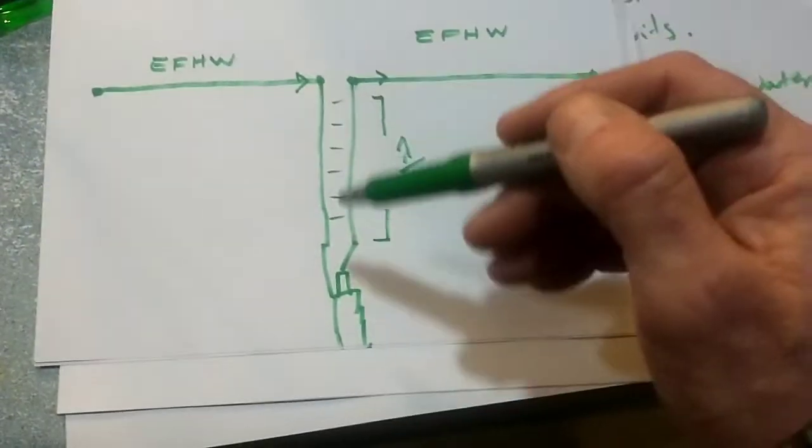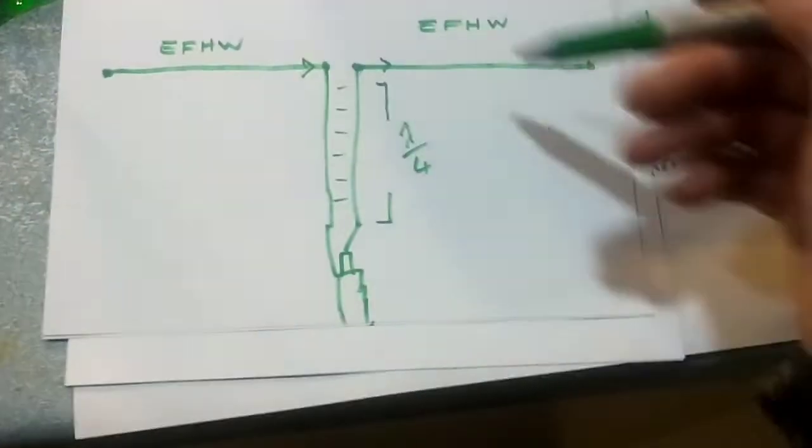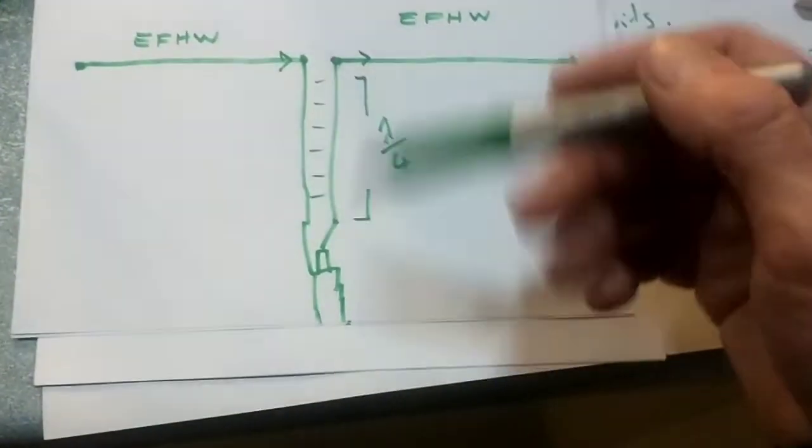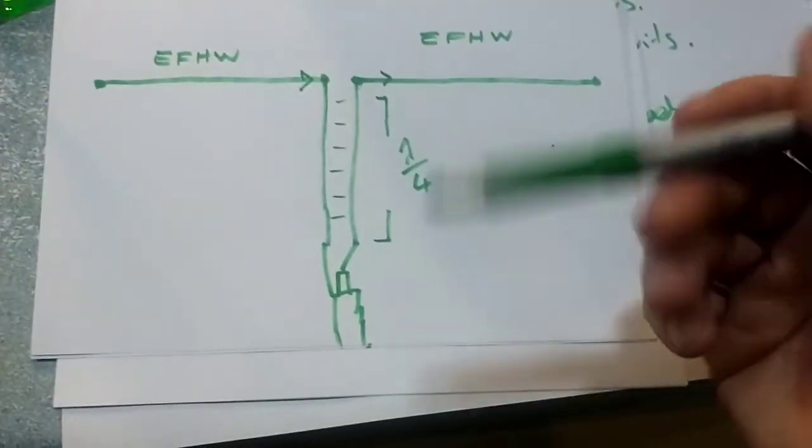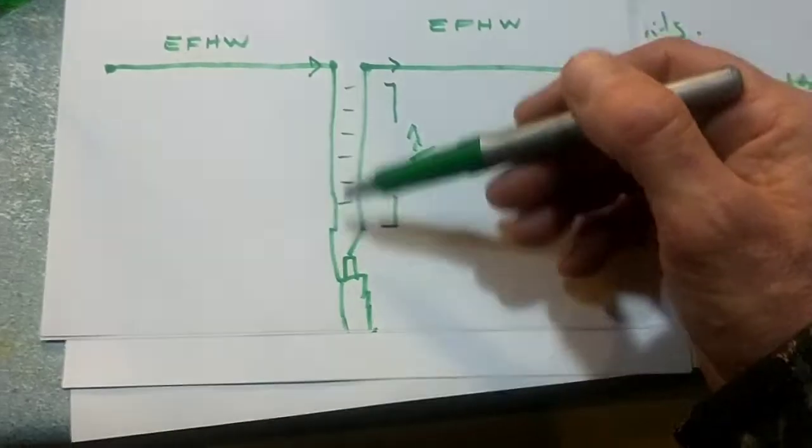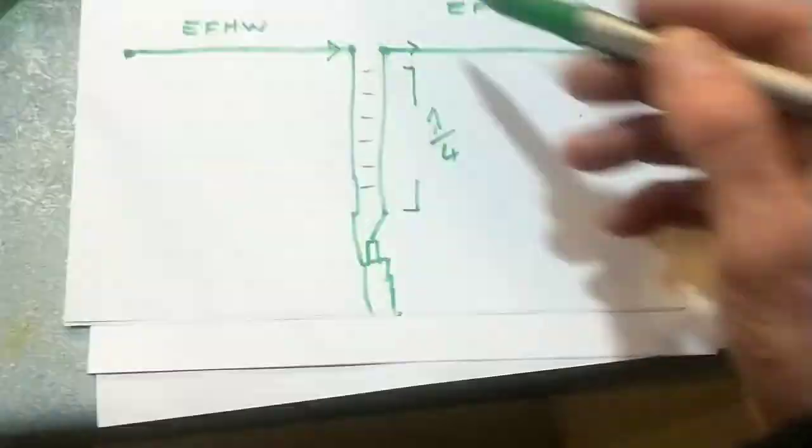Because you're getting 100% reflection and you're having to tune that back. Each time this is a transition along a lossy line, whereas you've got this low loss line.